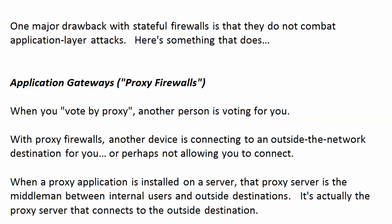One major drawback with stateful firewalls is that they don't combat application layer attacks. And here's something that does: it's called an application gateway, also known as a proxy firewall — two names, same thing. When you vote by proxy, another person actually casts your vote for you. With a proxy firewall, another device is connecting to an outside-the-network destination for you, or perhaps not allowing you to connect.